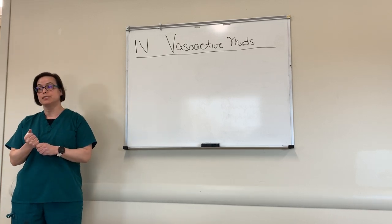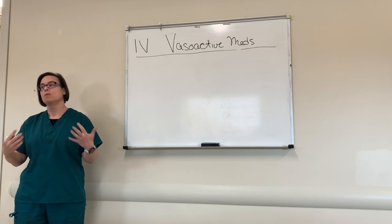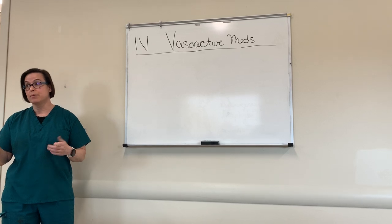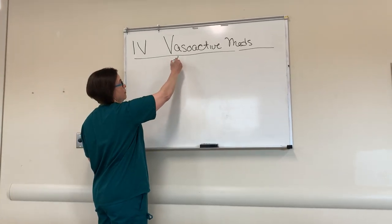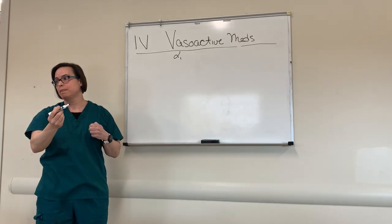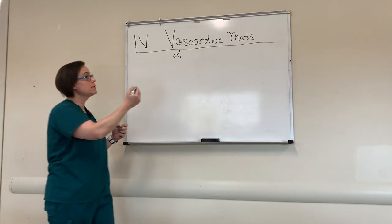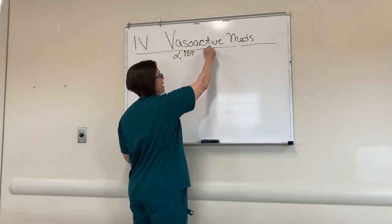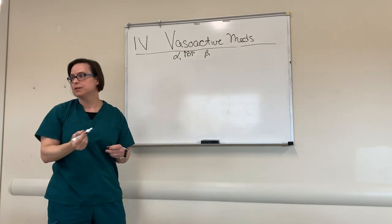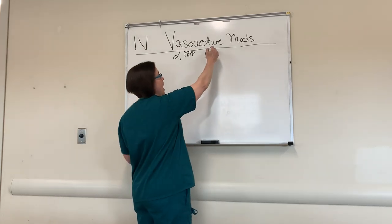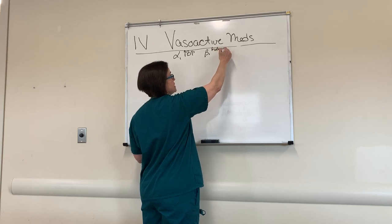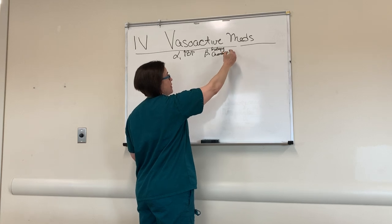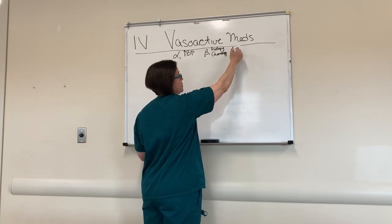I want to go through the different medications, what receptors they affect, and when to use them. There are three key receptors. Alpha-1 receptors squeeze blood vessels, so I think of that as increasing blood pressure. Beta-1 receptors provide inotropy — making your heart squeeze better — and chronotropy — making your heart go faster. And then there's beta-2: what does that do?